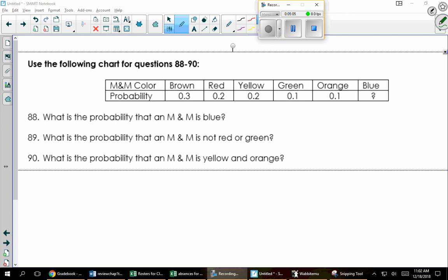This chart for the next three questions says, what's the probability it's blue? So I've got to figure out that. So I'm going to add these up, 3, 4, 5, 6, 7, 8, 9. This is going to be 10%.